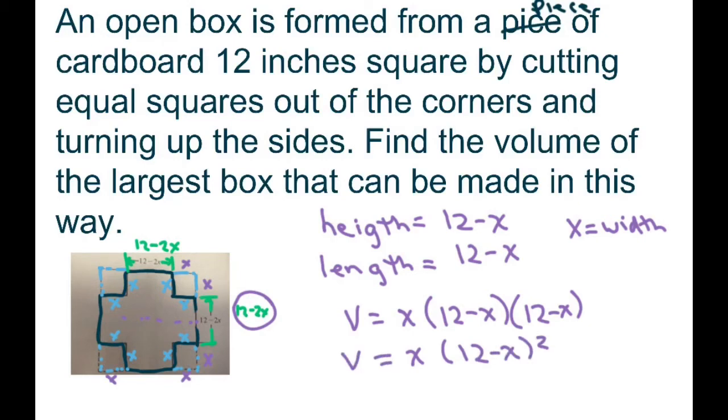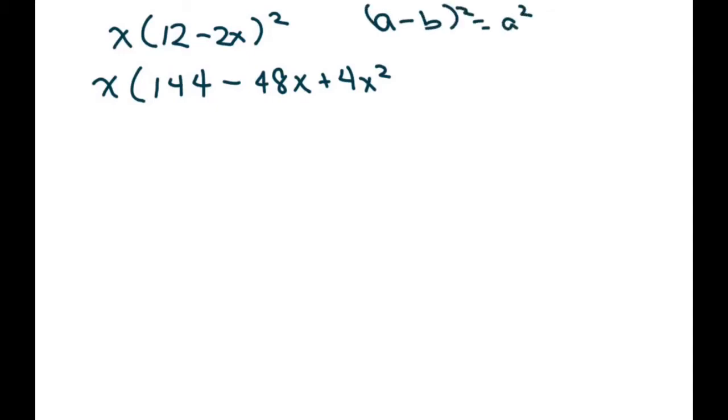Now, when you simplify this, let's write it out again, x times (12 minus 2x) squared. So when you do the expansion, you're going to get 144 for this first part minus 48x, and then plus 4x squared. And I'm just using the (a minus b) squared formula, which is a squared minus 2ab plus b squared.